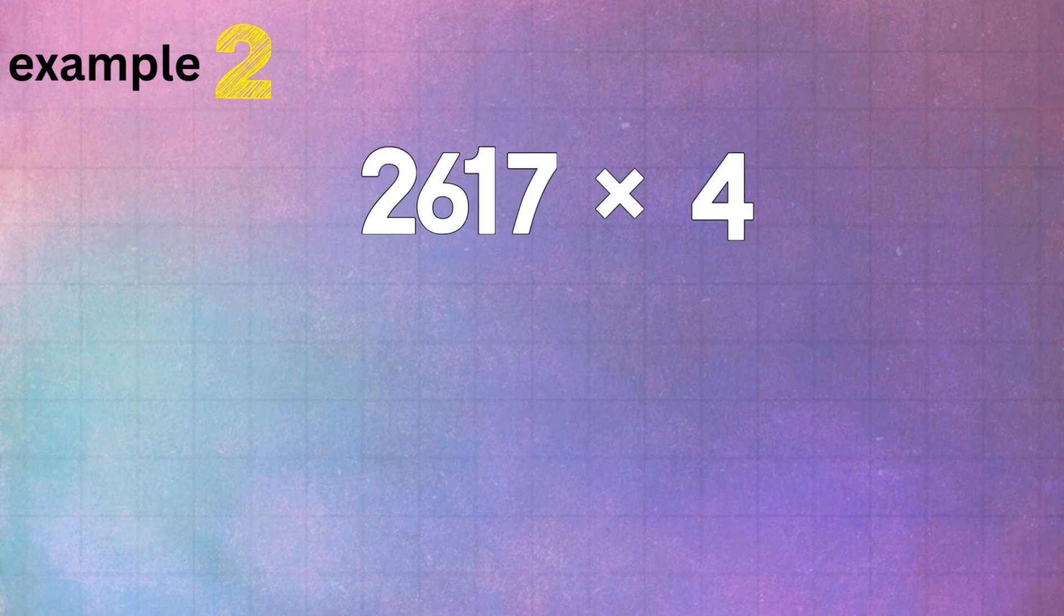Example 2: multiplying 2617 times 4. We stack the numbers the same way, with 2617 on top. This time, we have 4 steps to go through.